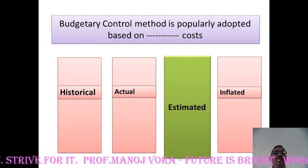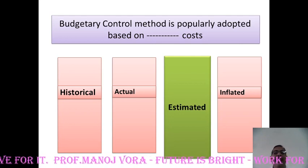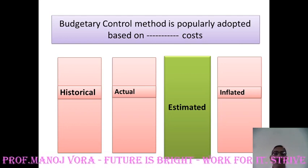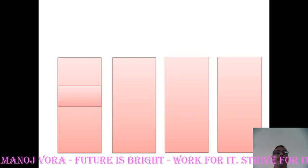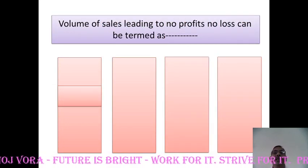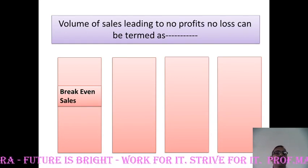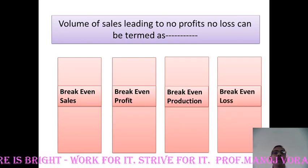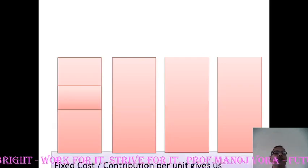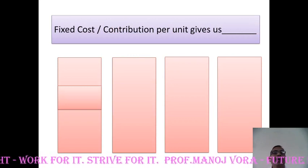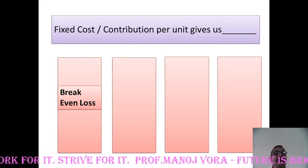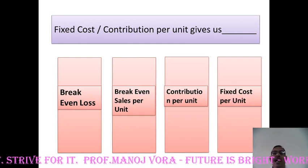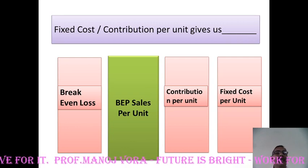A budget is mostly prepared for estimating or projecting future values. Volume of sales leading to no profits, no loss can be termed as — breakeven sales, breakeven profit, breakeven production, or breakeven loss. Your answer has to be breakeven sales. Fixed cost upon contribution per unit gives — breakeven loss, breakeven sales per unit, contribution per unit, or fixed cost per unit. Your answer has to be breakeven sales per unit.